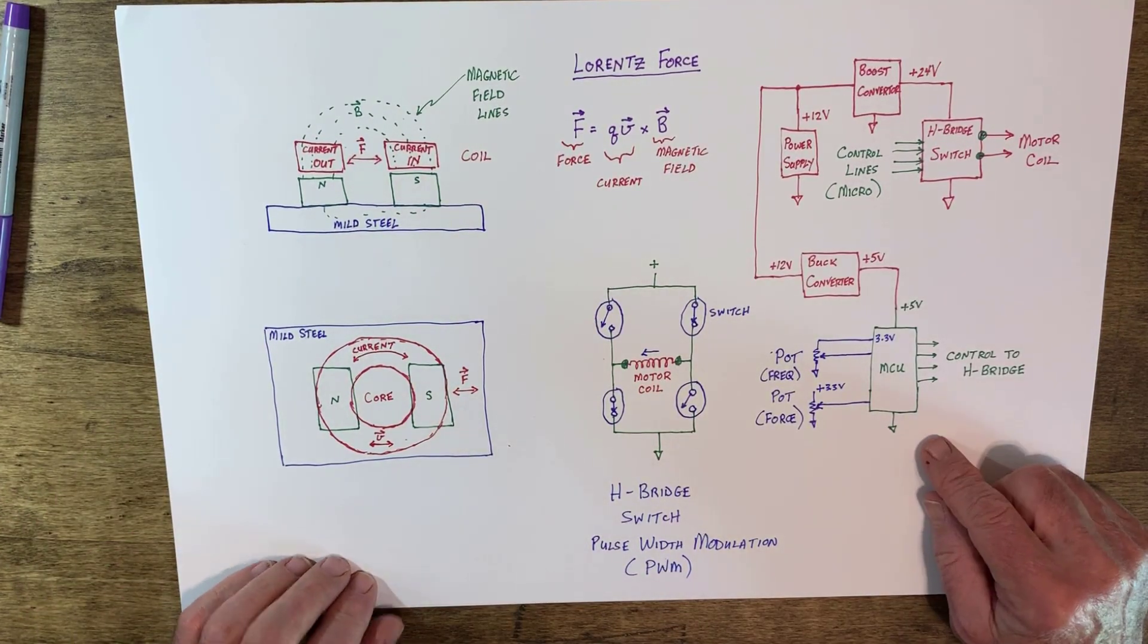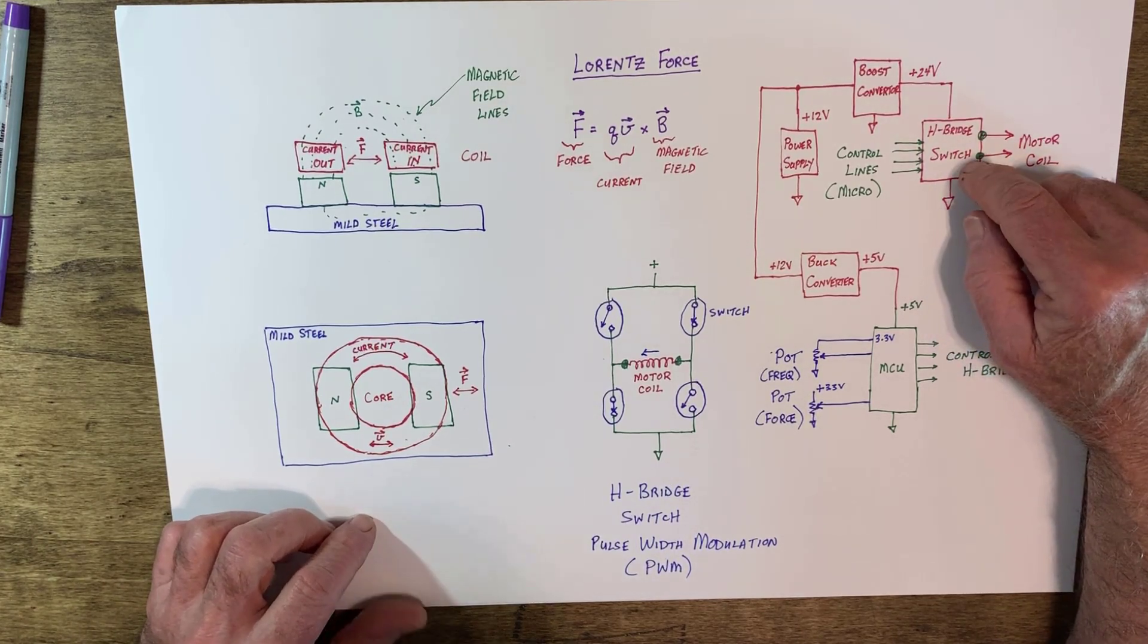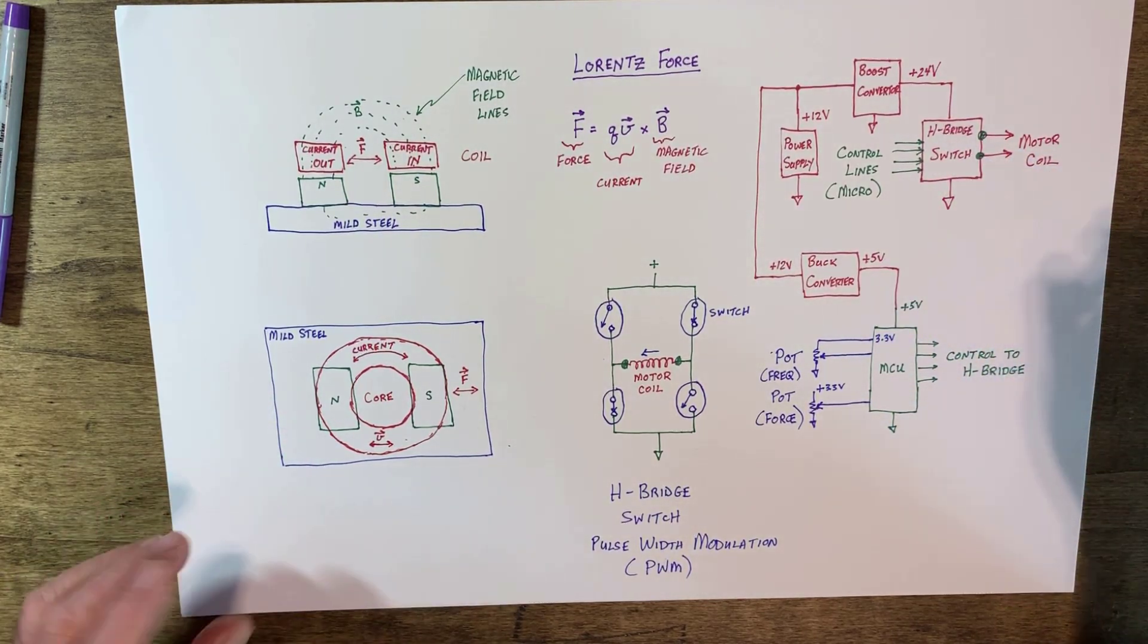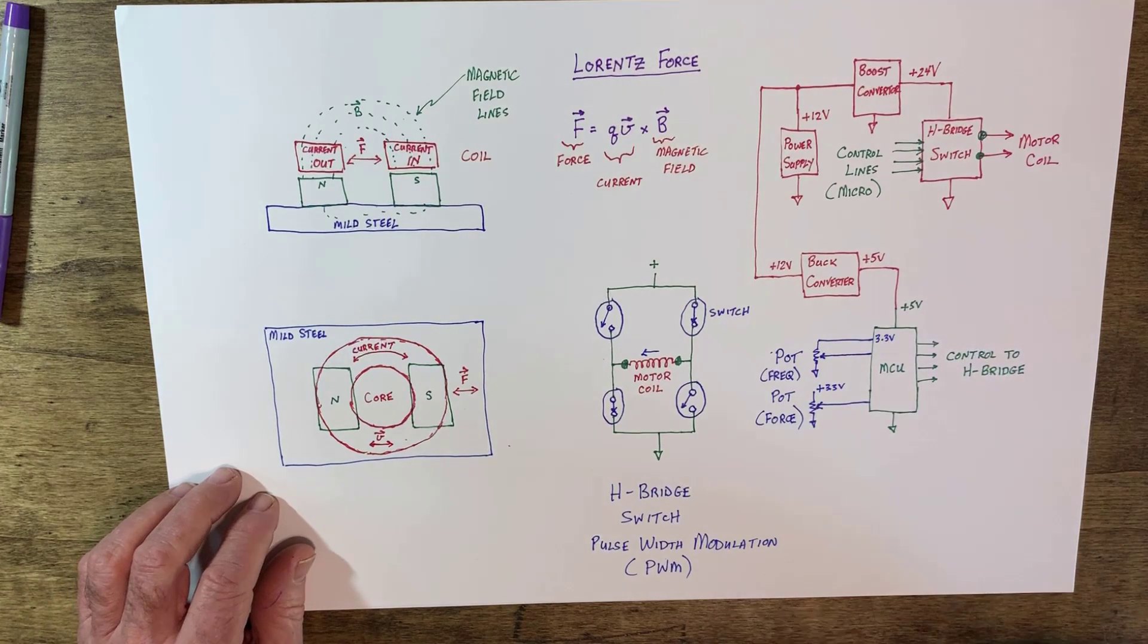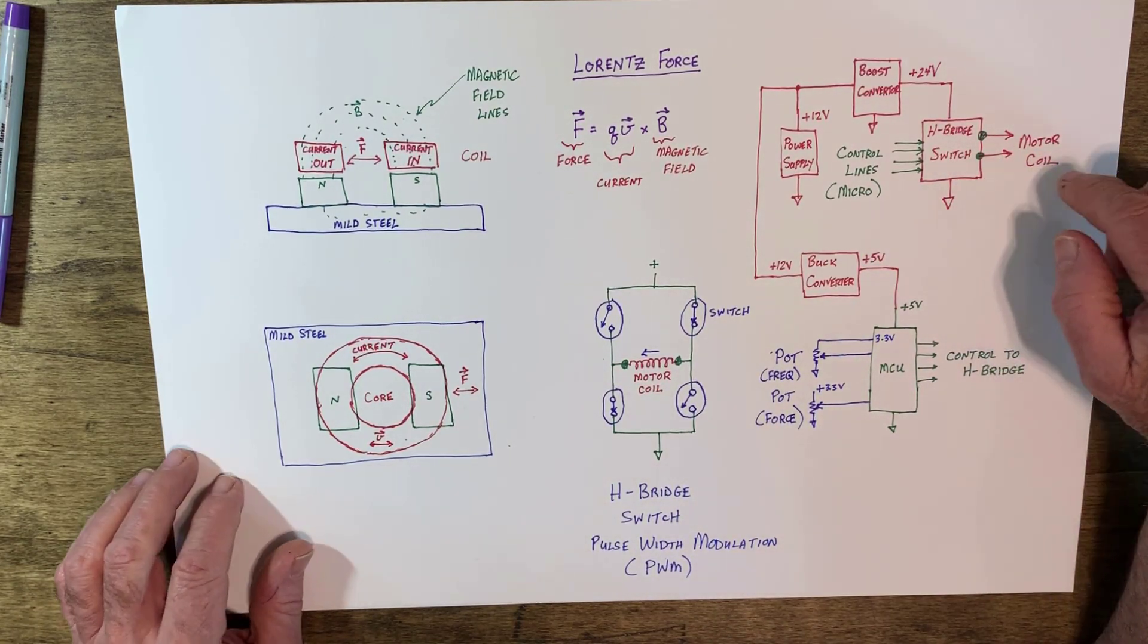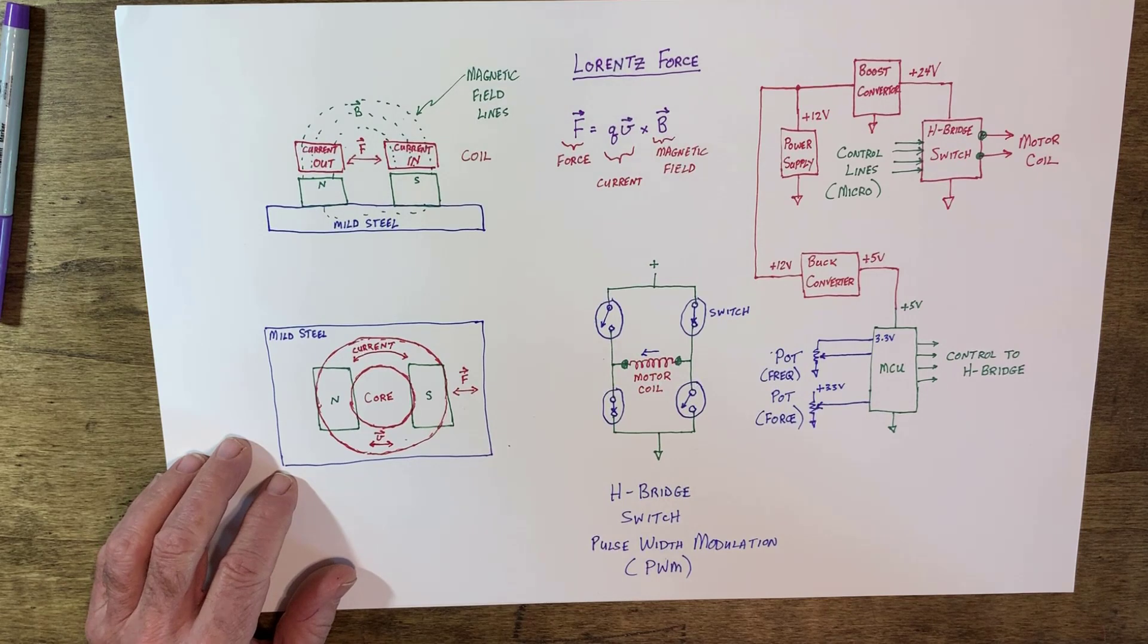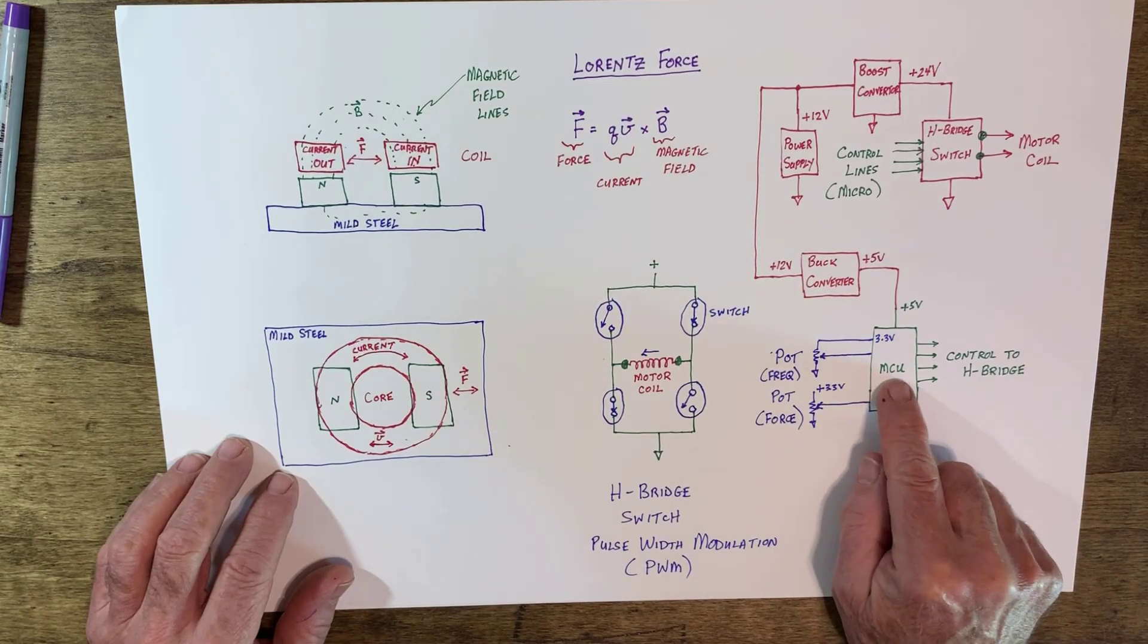So, we know we have to have a microprocessor to control this. You could control this probably with a bunch of other logic and timer circuits like the 555 timer and so forth. And that would work. But, I like the micro because you have a display and you can change the code and change the operation of the machine very easily. So, we add a microprocessor.